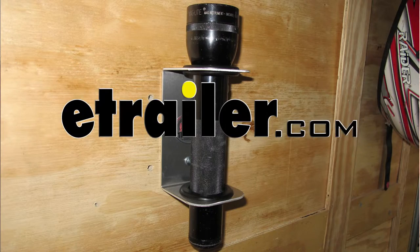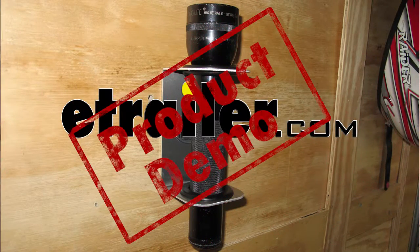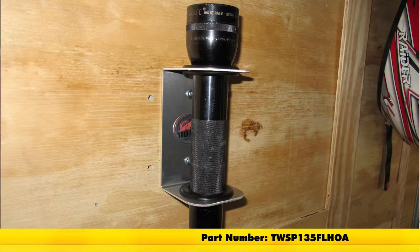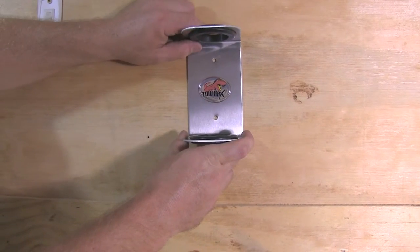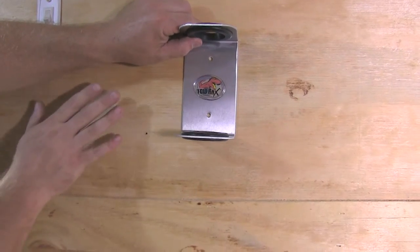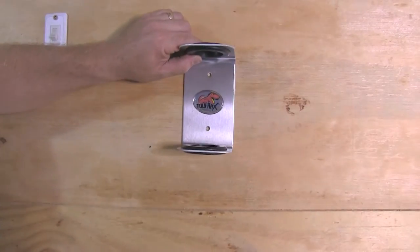Today we're going to be taking a look at the Torax Aluminum Flashlight Holder, part number TW SP135FLHOA. Now our flashlight holder does come pre-drilled with two mounting holes, but you will need to drill into whichever mounting surface you're choosing.